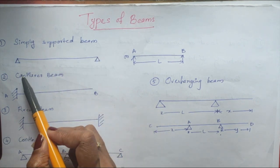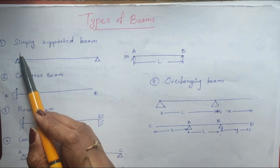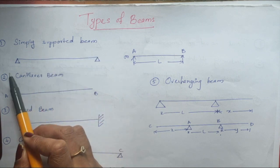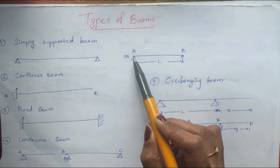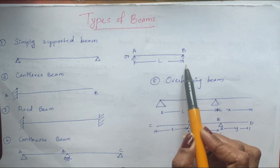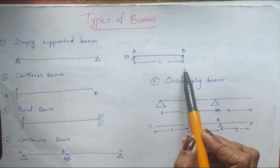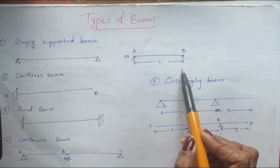We have already learned about simply supported supports. Here we have a simply supported beam which is supported at both the ends. There are two reactions on both the ends, separated by a distance of L. Like a bench or a table, it is supported at both the ends — that is a simply supported beam.